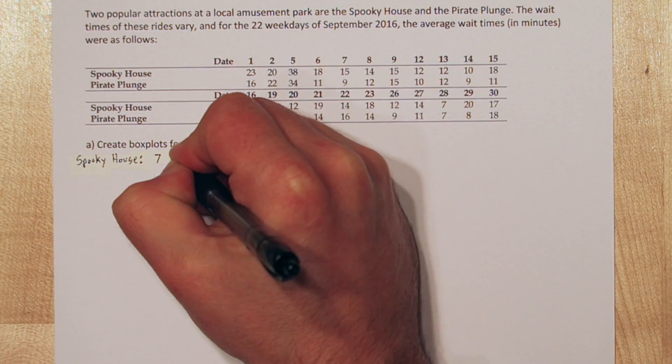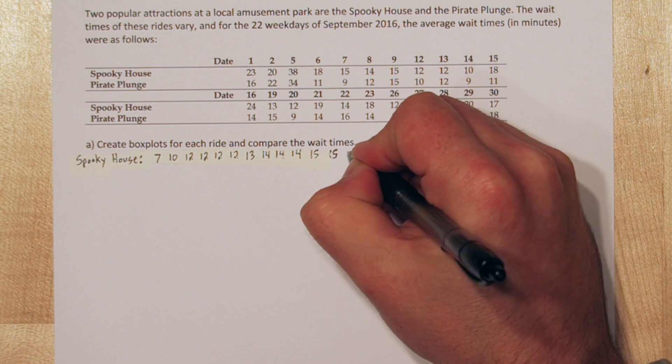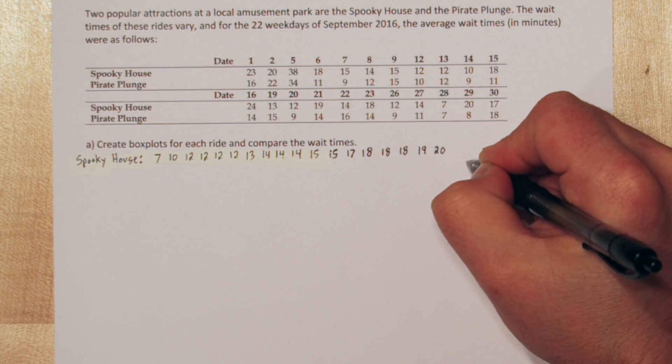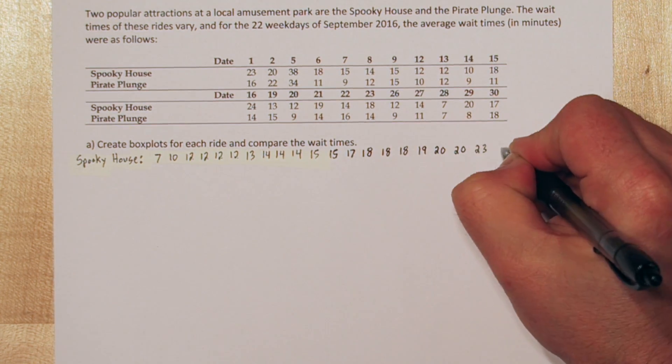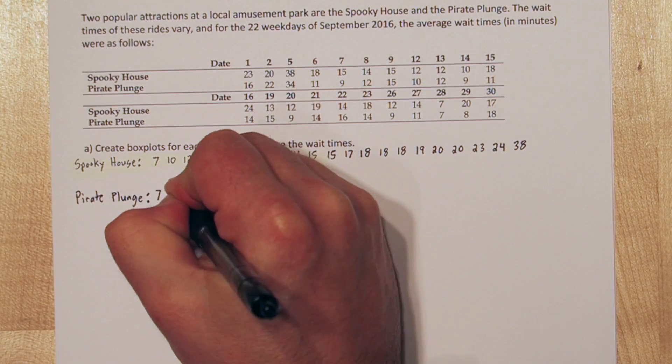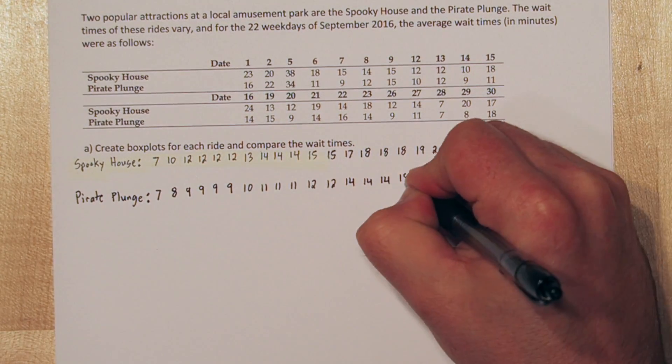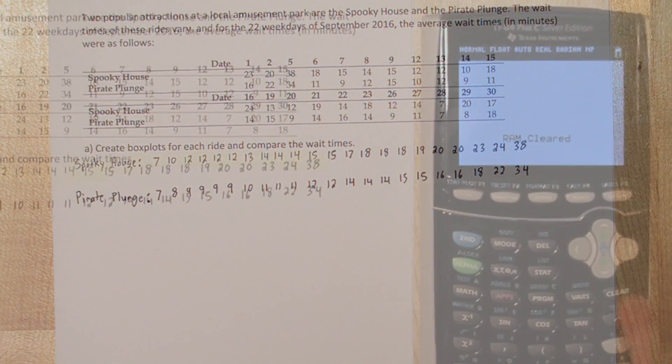The first step to creating box plots is to first list all the data in order from least to greatest. So let's list all the spooky house waiting times from least to greatest. Now let's do the same thing for Pirate Plunge. Now this is an easy spot to mess up because you might miss a data point and get something out of order. Let me show you a trick to always get it right.